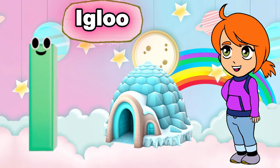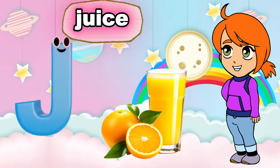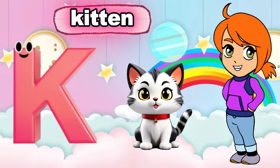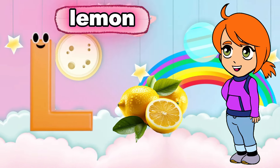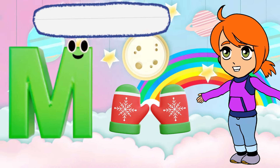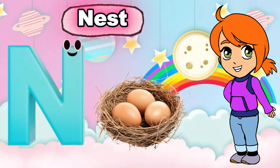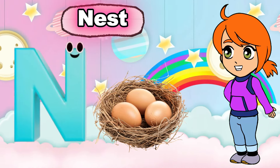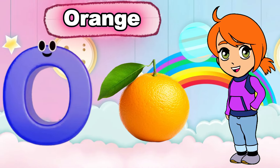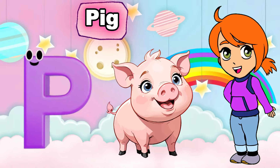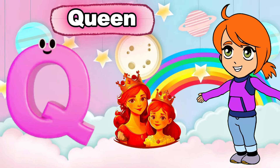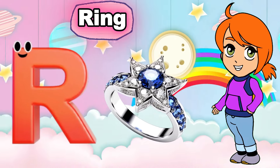I is for Igloo. e-e-e-igloo. J is for Juice. j-j-j-juice. K is for Kitten. k-k-k-kitten. L is for Lemon. l-l-lemon. M is for Mittens. m-m-m-mittens. N is for Nest. n-n-n-nest.